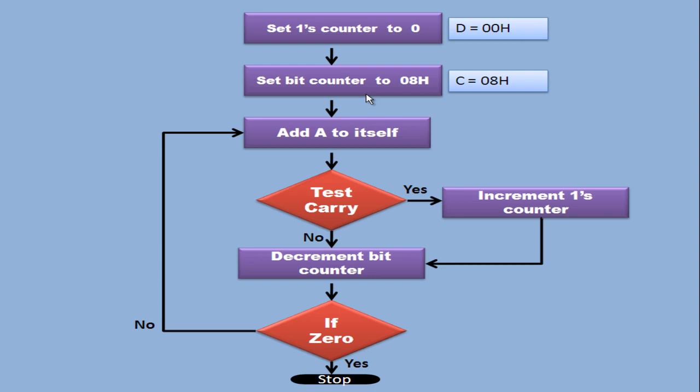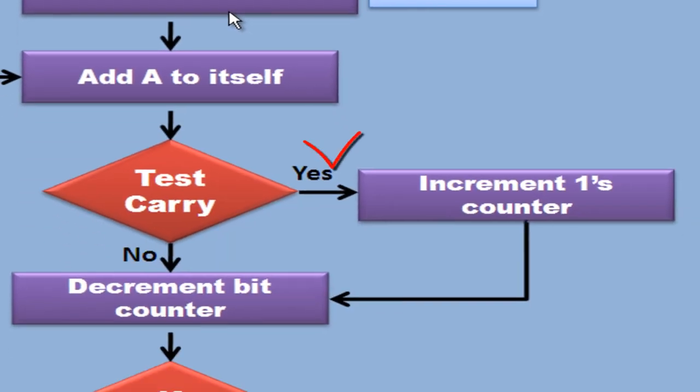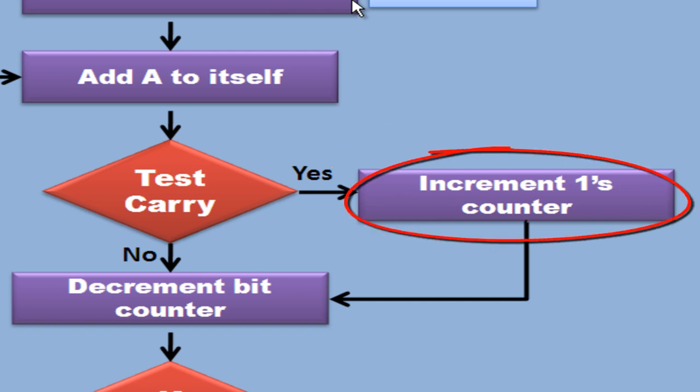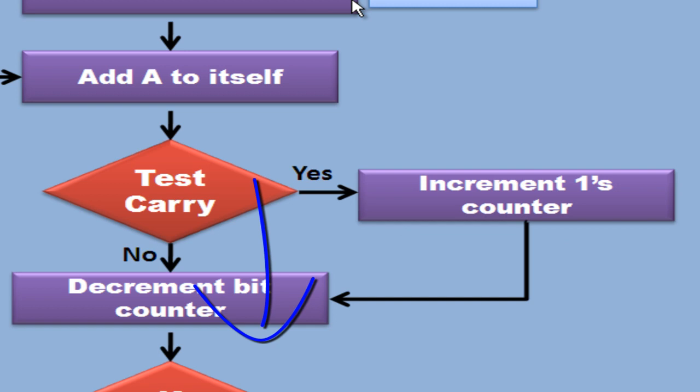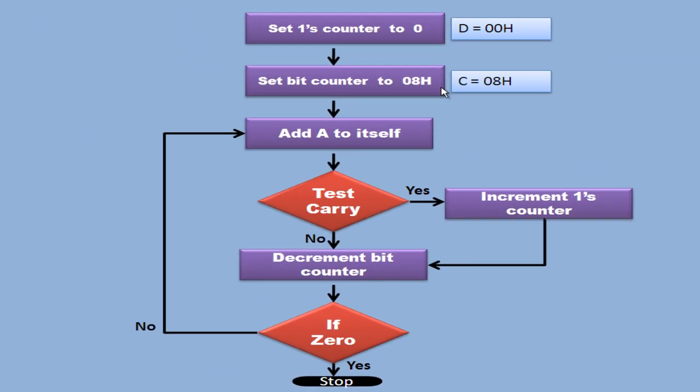Let us talk about the flow diagram. Set once counter to 0. Say for example, register D to 0. Set bit counter to 8. We have 8 bits in register A and therefore the bits counter is 8. Add A to itself. So MSB goes into the carry flag. Test carry flag. If the carry flag value is 1, then increment the ones counter. If the carry flag is not 1, then skip this step and decrement the bits counter. If the bits counter is 0, then you have the value in register D, the number of ones in register D.